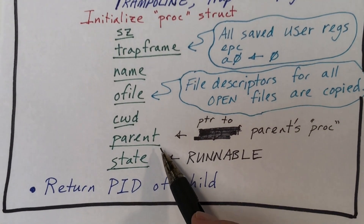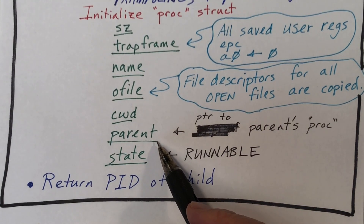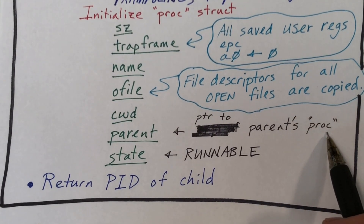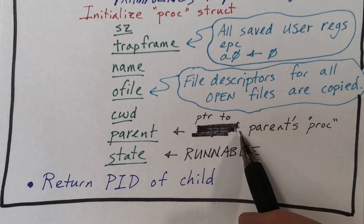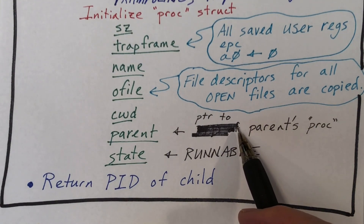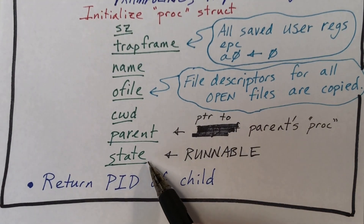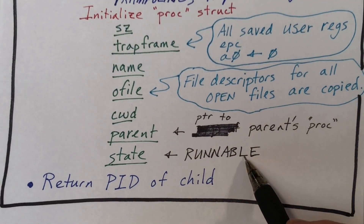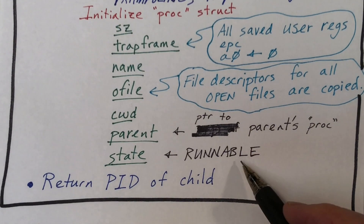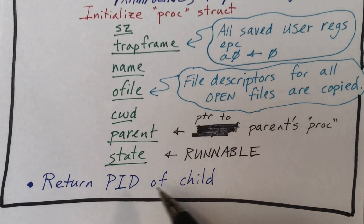We then set the parent pointer in the child's proc structure to point to the parent's proc structure. This is the other difference between the child process and the parent process — they each have a different location in the parent-child hierarchy of processes. Finally, we set the state to runnable, and at that point we're done creating the child process. It's runnable and it will be scheduled when it's given a chance, so the system call is able to return the process ID of the child that has been created.